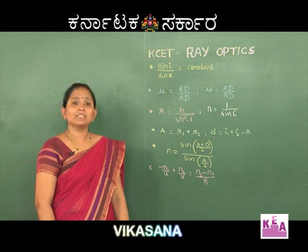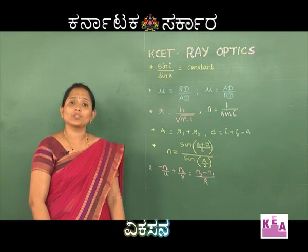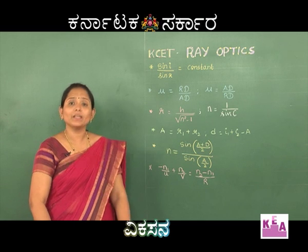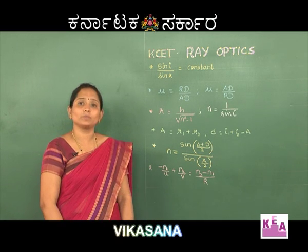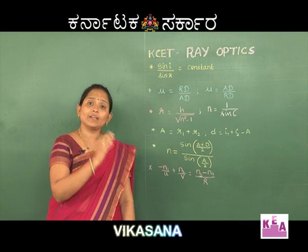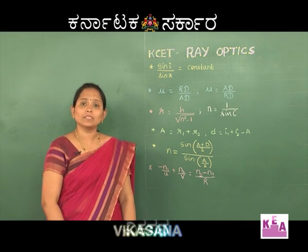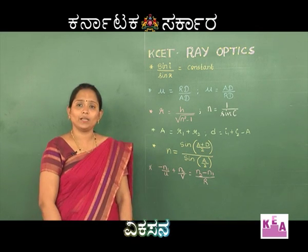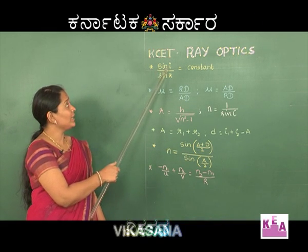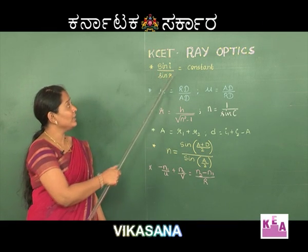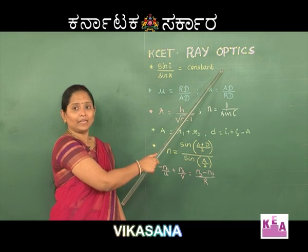So, let's move on to the very important topic of refraction of light. In this concept we have three different topics: refraction through a plane surface, refraction at a prism, and refraction through a spherical surface. Snell's law is given by sin i / sin r = constant, which is written as the refractive index.